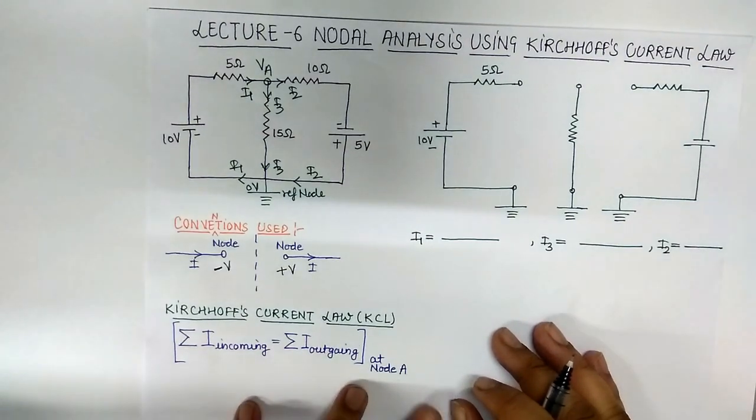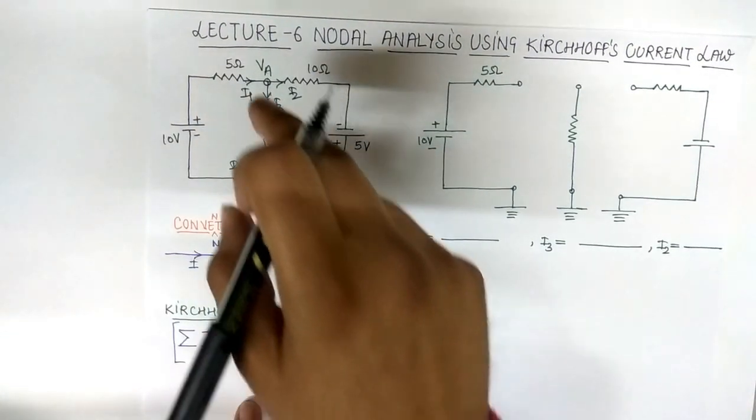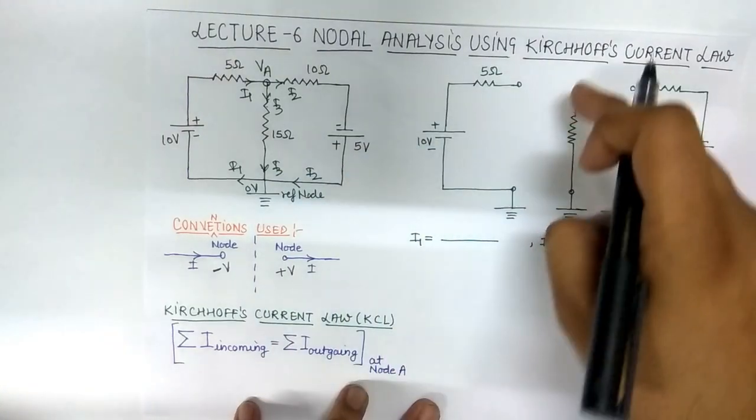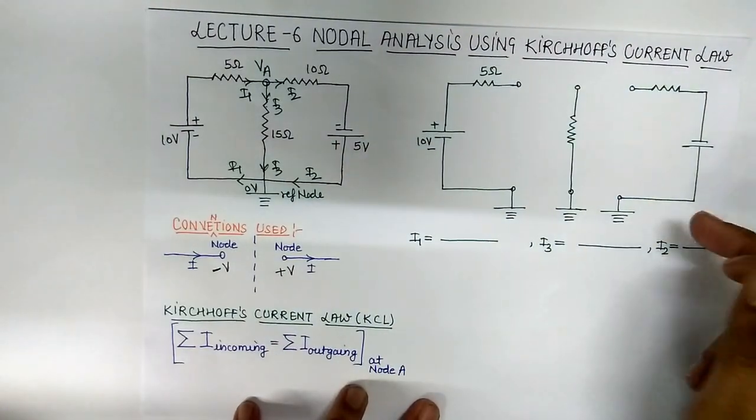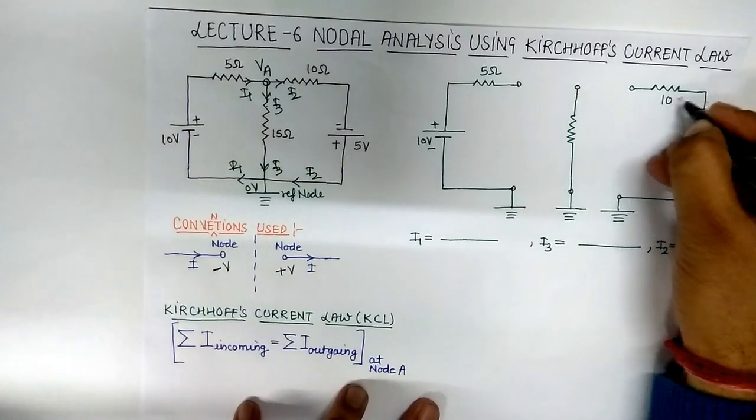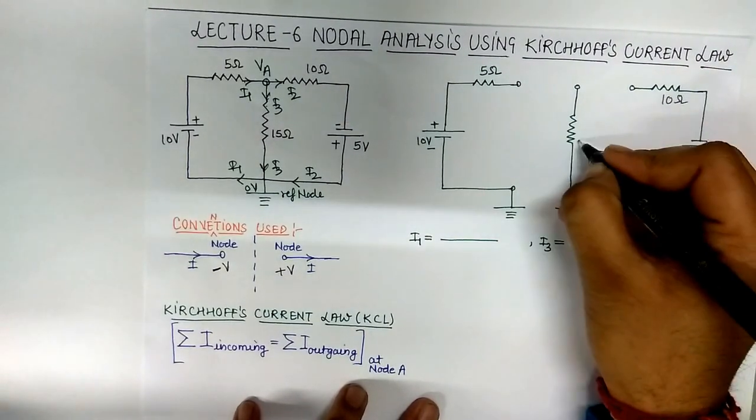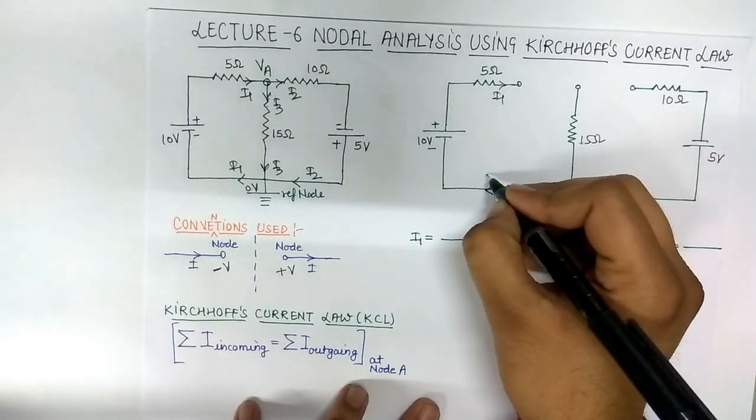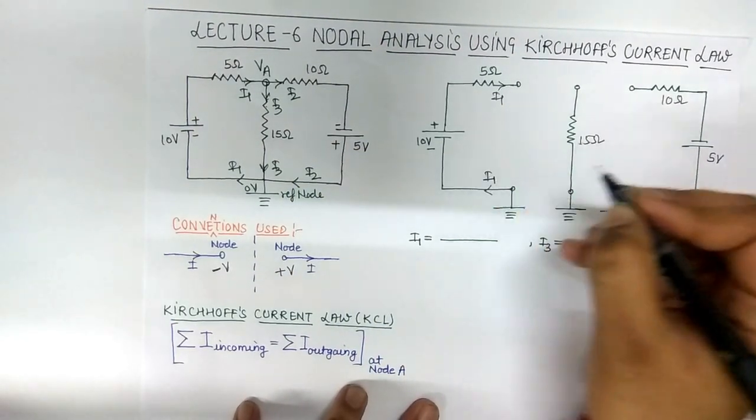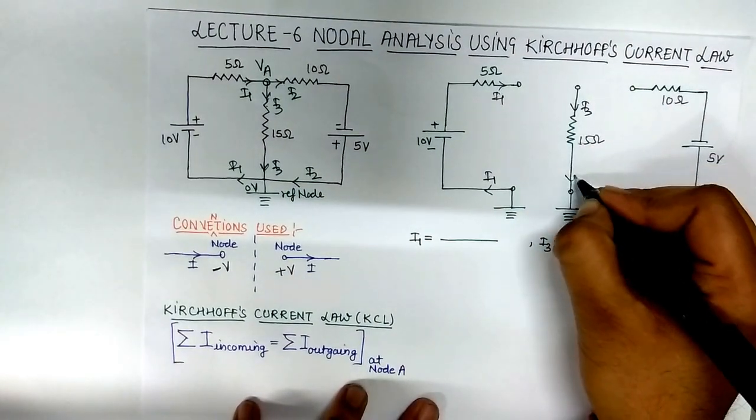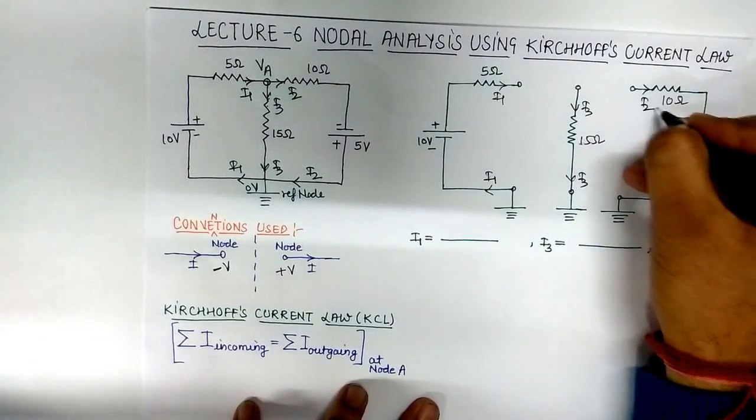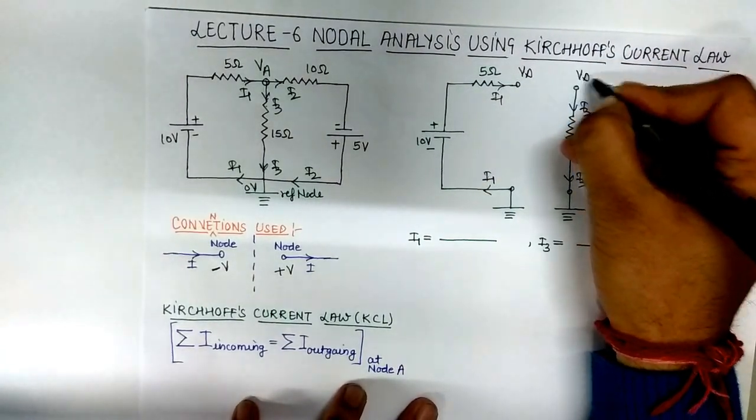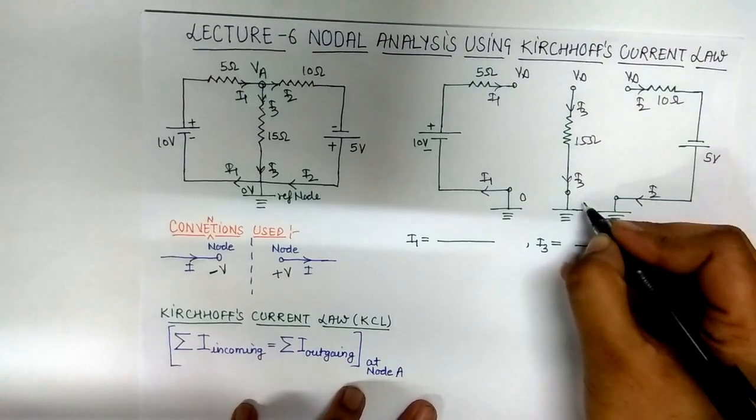So now here I separate out every branch at a particular node A and reference node in this way: 5 ohm, 10 volt branch, 15 ohm branch, and this is our 10 ohm and 5 volt battery here. I mentioned every abbreviation earlier assumed in the previous circuit: I1, this is I3, and this is I2.